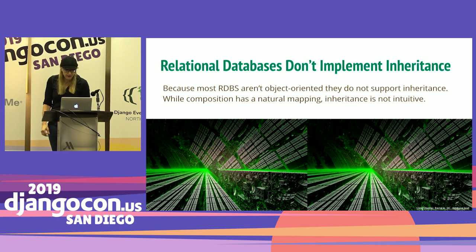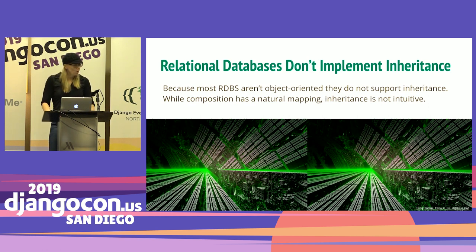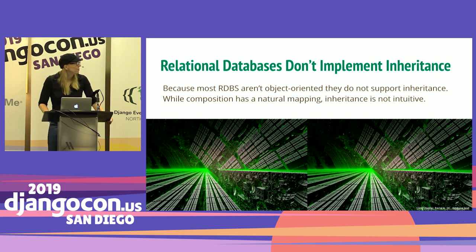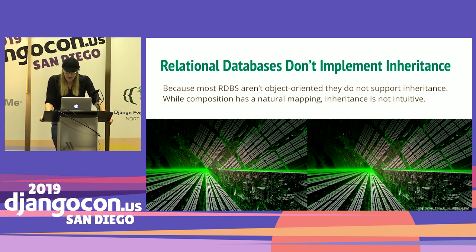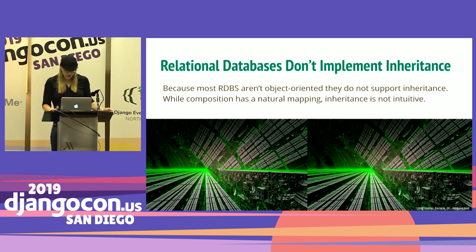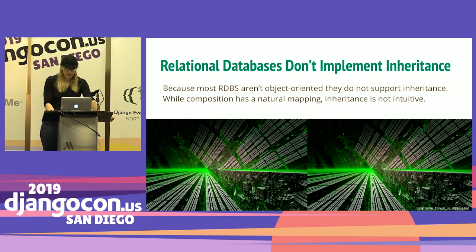While inheritance provides a way to avoid repeating yourself, it's more obvious and natural for us to build associations between objects than it is to try to find commonalities and organize them into a hierarchy. When we think about how objects map to the database via the ORM — the object relational mapping — we find that composition is really intuitive and has a natural mapping. However, inheritance isn't even supported by relational databases, so we have several different approaches to choose from.